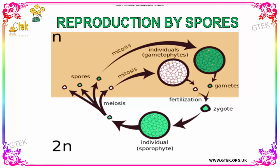In reproduction by spores, you can see two stages: one represented by N and another by 2N. The meiosis process occurs, followed by mitosis. This forms individual gametophytes, which then release gametes through the fertilization process, and finally the zygote is formed — continuing the cycle. Alternatively, mitosis can also produce gametes that similarly form a zygote by fertilization, and this cycle is continued as well.